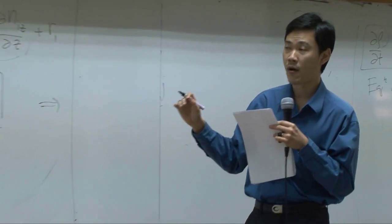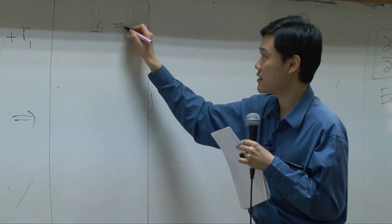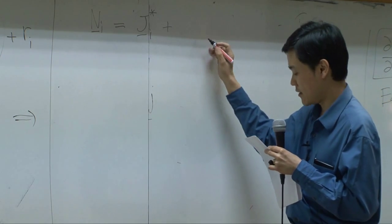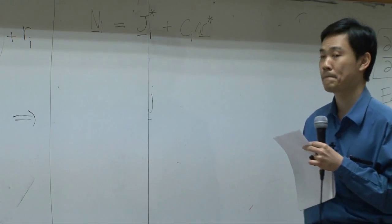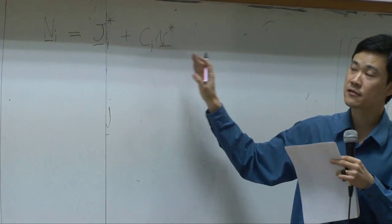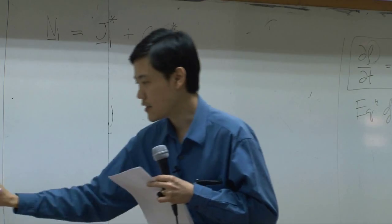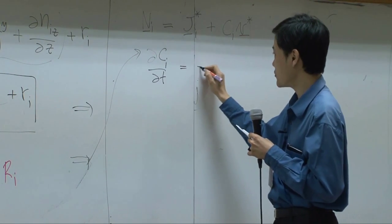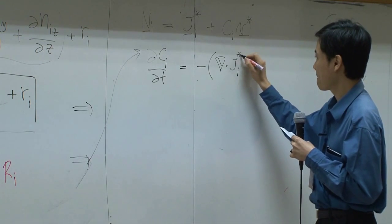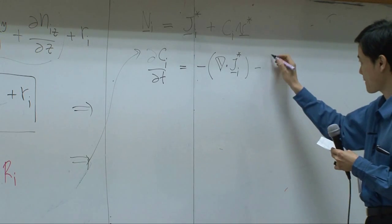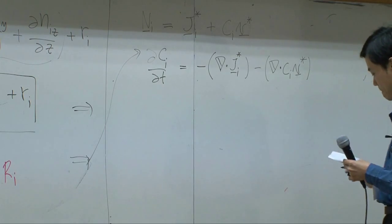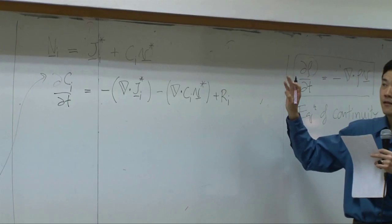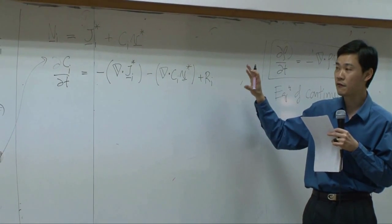Then, if I repeat the same process, combined molar flux is equal to diffusion flux represented in molar basis. This is combined flux, diffusion flux, convective flux in molar basis. Plug it back in there. This equation should give you dCi/dt equal to minus...